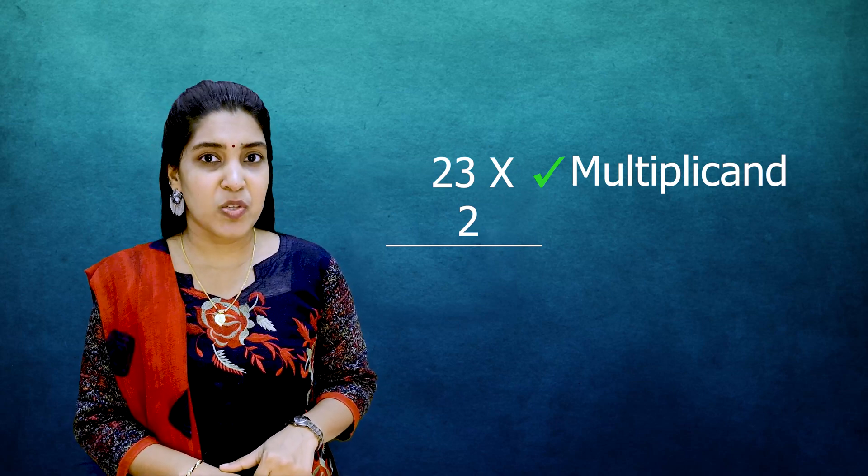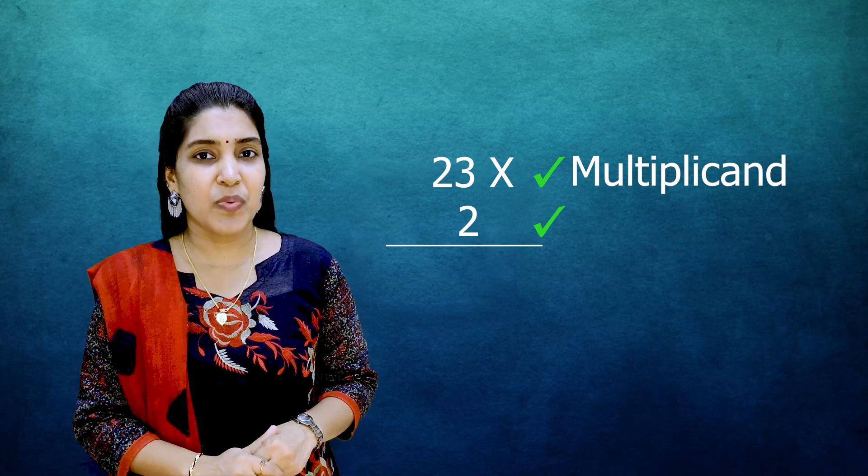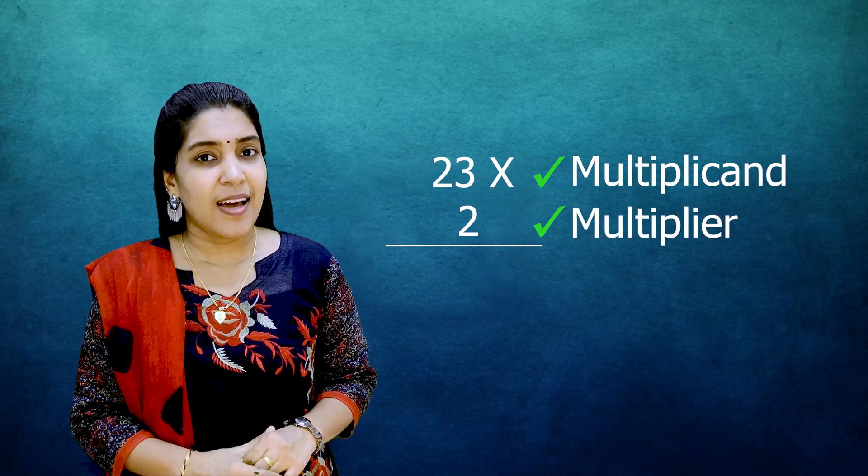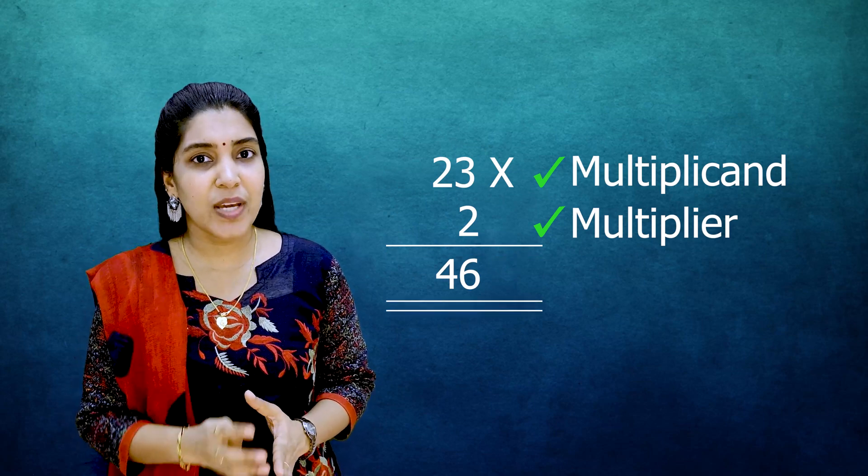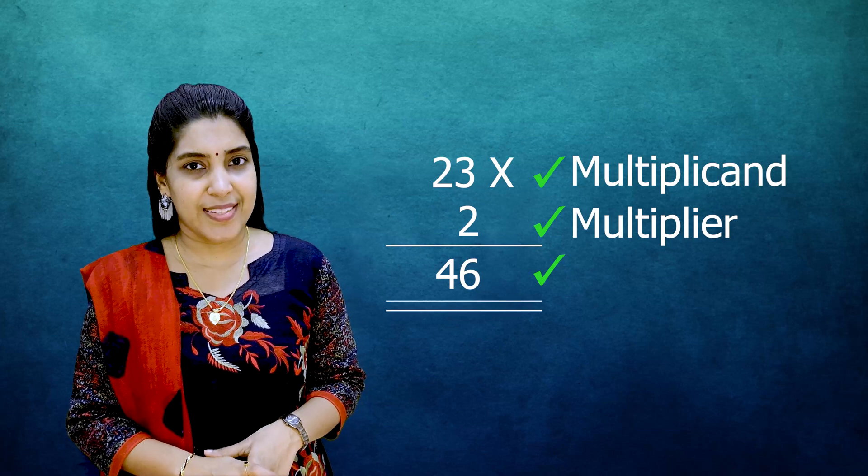And the number by which we are multiplying it is 2. This is what we call the multiplier. And after the calculation, after the multiplication, what result we are getting? That is what we call the product.